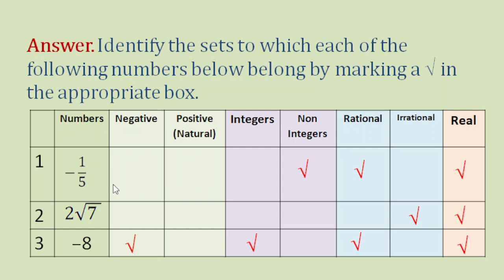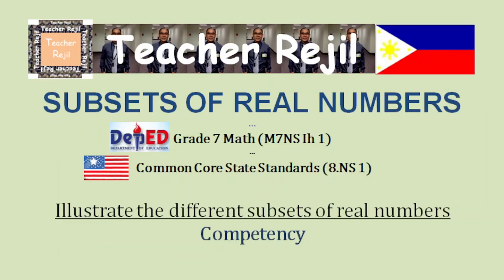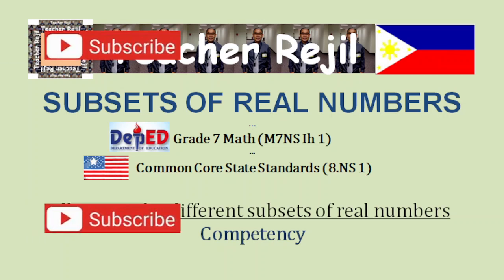For negative 1 over 5, it's real, rational, and non-integer. For item number 2, it's real and irrational. For item number 3, it's real, rational, integer, and negative. Did you get all the items right? I hope you did. Thanks for watching, guys. This is Teacher Reggio. Keep safe.